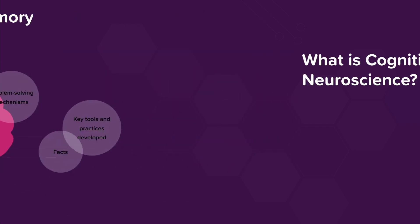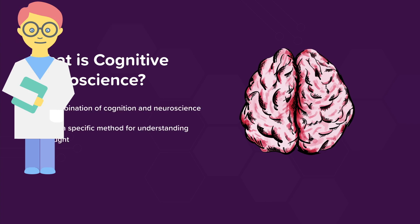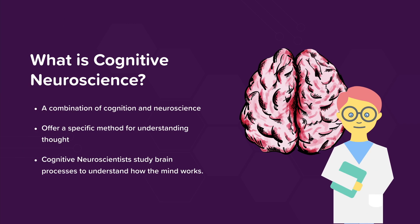So cognitive neuroscience is a combination of cognition and neuroscience. Cognition and neuroscience together offer a specific method for understanding thought. Cognitive neuroscientists study brain processes to understand how the mind works.